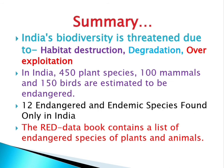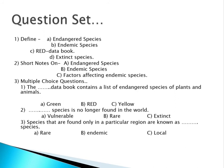In summary, Indian biodiversity is threatened due to habitat destruction, degradation, and over-exploitation. In India, there are 450 plant species, 100 mammals, and 150 birds estimated to be endangered. Twelve endangered and endemic species are found only in India. Endangered and threatened plant and animal species are listed in the Red Data Book.